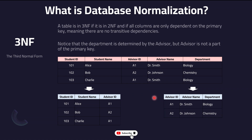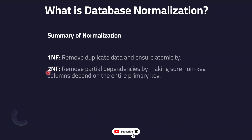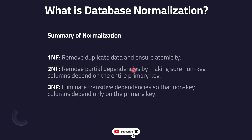In summary: 1NF helps you remove duplicate data and ensure atomicity — one column has one value. The 2NF rule removes partial dependencies by ensuring all non-key columns depend on the entire primary key. The 3NF rule eliminates transitive dependencies so that non-key columns depend only on the primary key, as we saw with the department example.